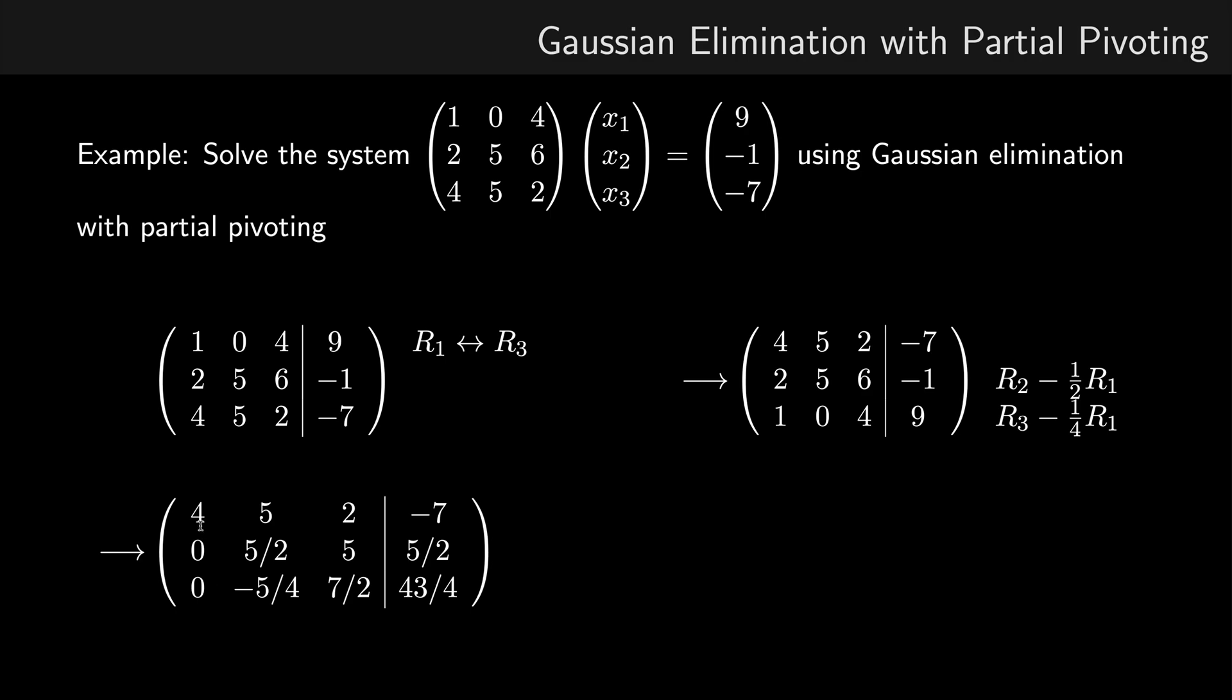Okay, so our next pivot is 5 over 2. So what we do is we compare the absolute value of the pivot to the absolute values of the elements beneath it. So 5 over 2, this is greater than 5 over 4. So just ignore the negative sign there. So we don't have to perform any row swaps because our pivot element is already larger than the element beneath it.